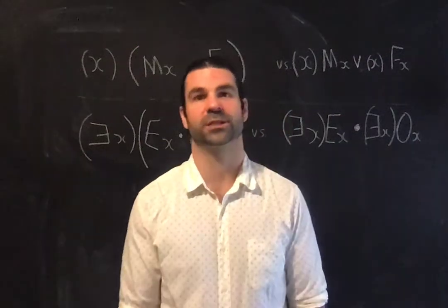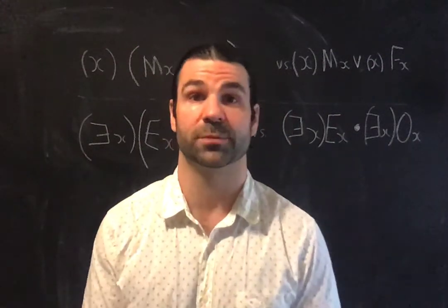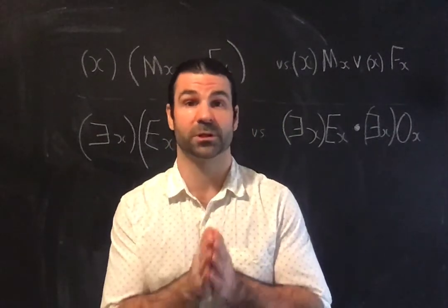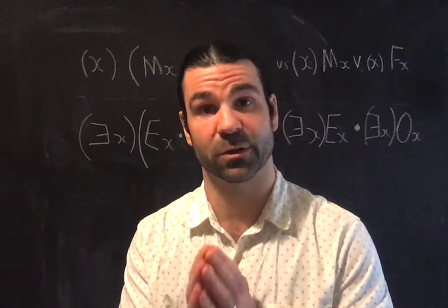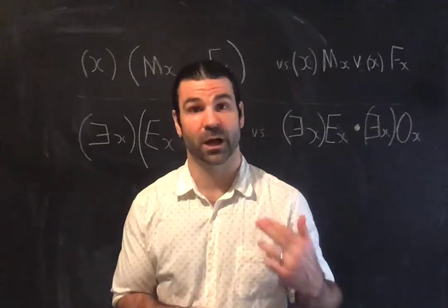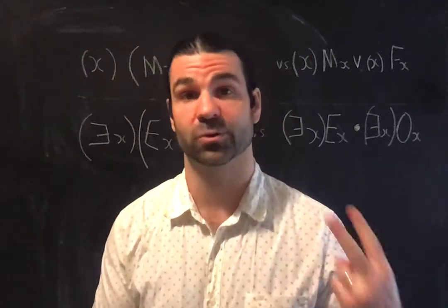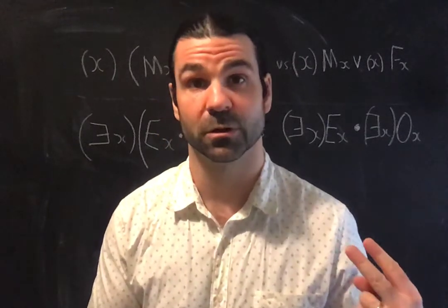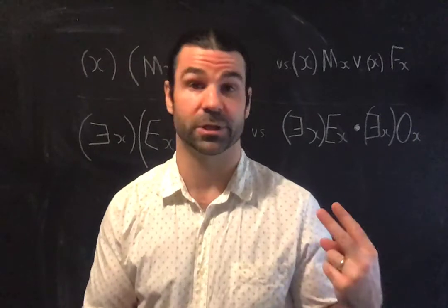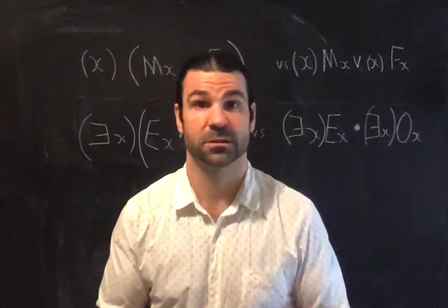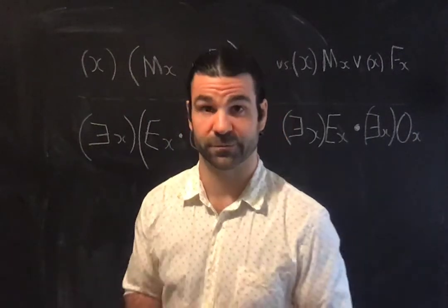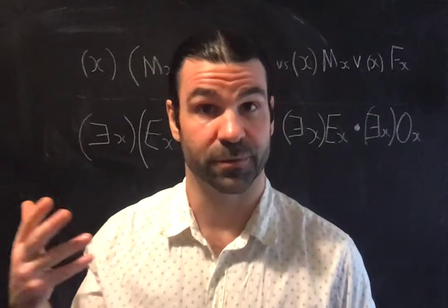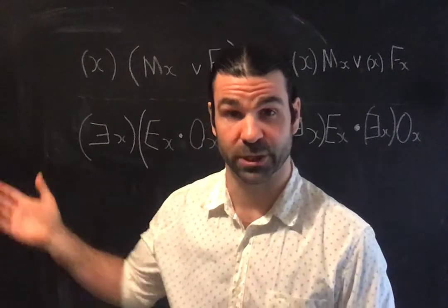Unit 14, Part 6. The most important lesson of Unit 14 is learning to distinguish formulas that are in quantifier form from those which are not in quantifier form. Formulas are in quantifier form if they satisfy two conditions: first, it must begin with a quantifier; second, the scope of the initial quantifier must go to the end of the formula. Over the first five parts, I stressed why that was so important in the context of proofs, which we are heading into in Unit 15.